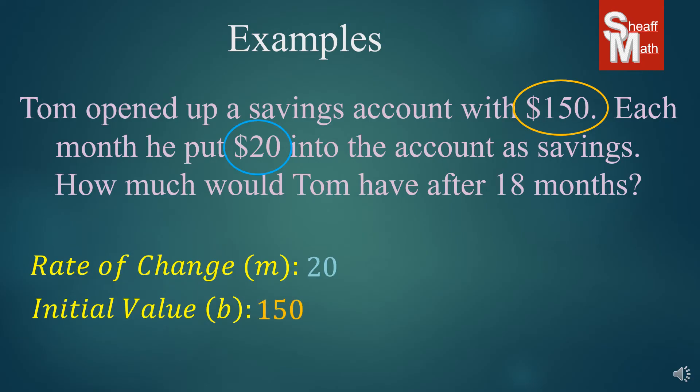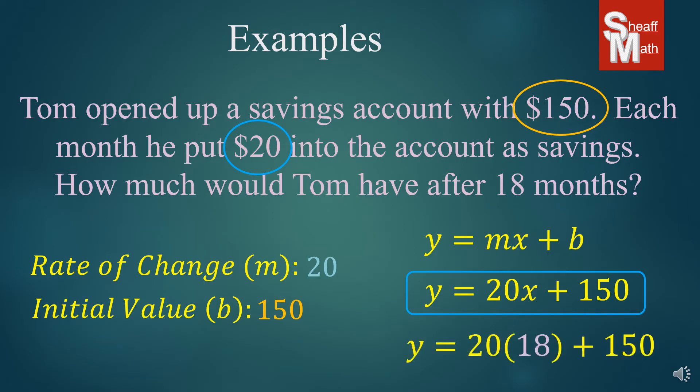And so we simply have to put these values into our slope intercept form. So the m is 20 and the b is 150. So there it is. And so if we look at it, the 20, we're going to be multiplying that by, well, how many months that he's going to be saving. And then what we're going to add to that is how much he started with his initial value. Now in this particular problem, it asks how much money Tom had after 18 months. Now this lesson is not about solving them. It's about writing the equation, but if you wanted to, what we would do is we would multiply $20 times 18 months. And then after we figure that out, we would add how much he started with, which was 150. And that's how much you would get. And I'm going to let you figure that one out on your own later.